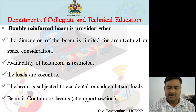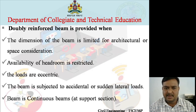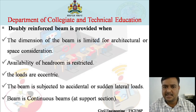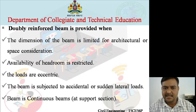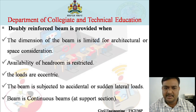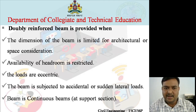The aim of providing a double reinforcement beam: a double reinforced beam is provided when the dimension of the beam is limited for architectural or space considerations, availability of headroom is restricted, loads are eccentric, the beam is subjected to accidental or sudden lateral loads, or the beam is a continuous beam. In these conditions we provide a double reinforced beam.